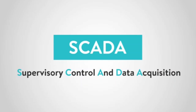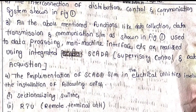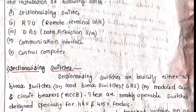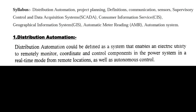For the implementation of a SCADA system or any electrical distribution automation system, the required units are: sectionalization switches, RTU (Remote Terminal Unit), DAS (Data Acquisition System), communication interface, and control computer. These five parts are important for the distribution automation system. Distribution automation can be defined as a system that enables an electric utility to remotely monitor, coordinate, and control components in the power system in real-time from remote locations, as well as autonomous control.